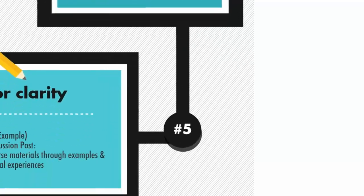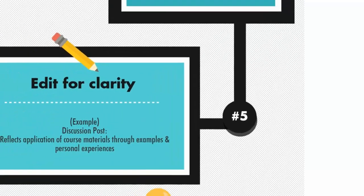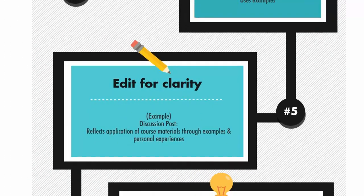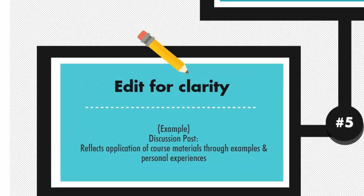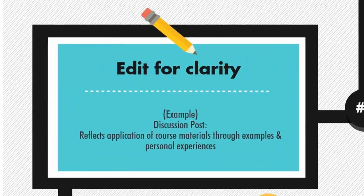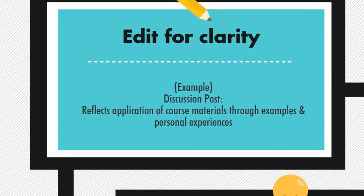Step 5: Edit for Clarity. For example, a Discussion Post criterion might be edited to: "Reflects the application of course materials through examples and personal experiences."